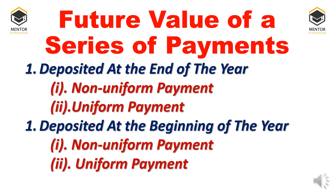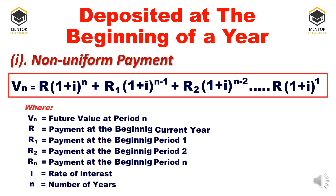In this video I will cover the non-uniform payment formula. Vn equals R into (1+i)^n plus R1 into (1+i)^(n-1) plus R2 into (1+i)^(n-2), and so on till the last payment, which is R into (1+i)^1. Here, Vn is the future value at the nth period, R is the payment at the beginning of the current year, R1 is the payment at the beginning of period 1, period 2, and so on till the nth period. i is the rate of interest.